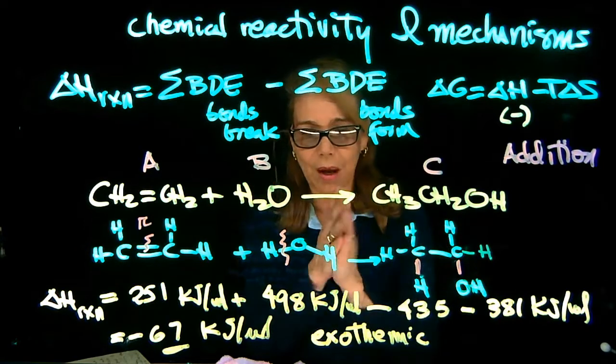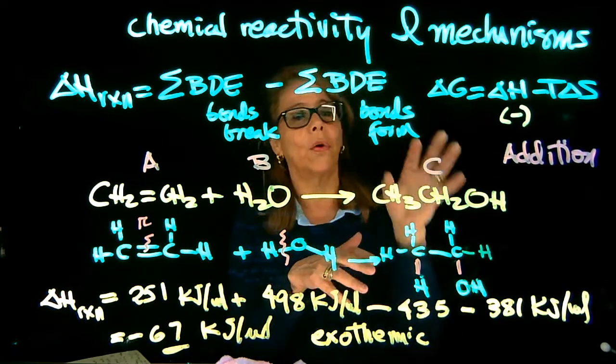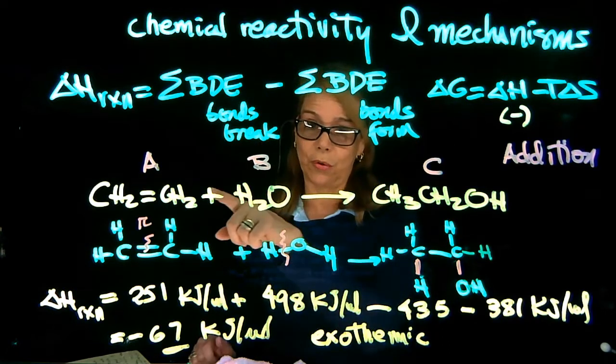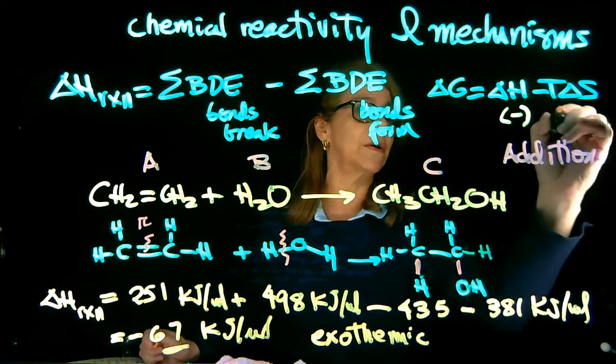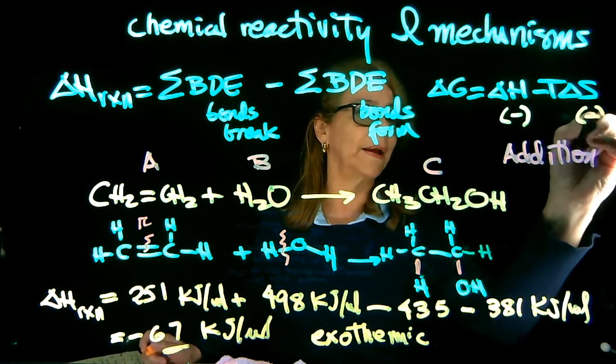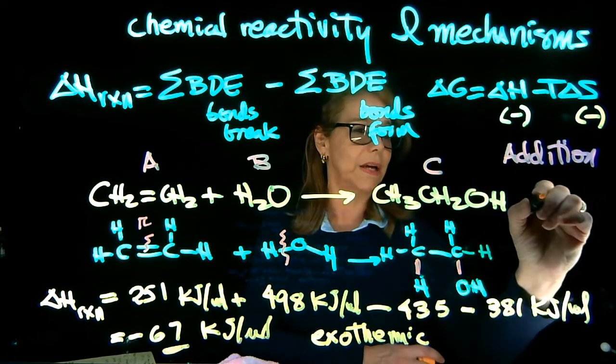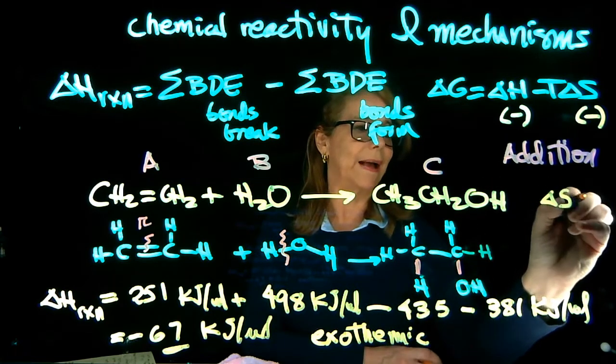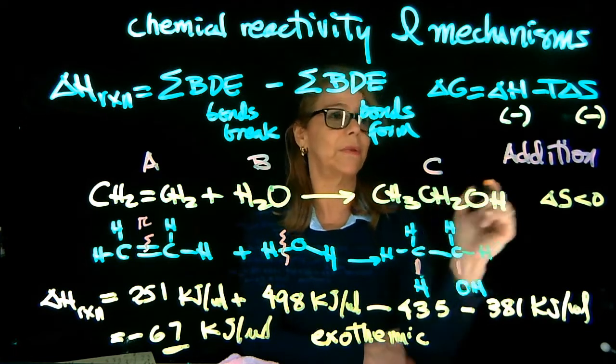So the number of molecules is less now on the right than it is on the left. So entropy had decreased in going from reactant to products. So the sign here is negative for the entropy. Again, this process, the addition reaction, has a negative change in entropy. Entropy is decreasing.